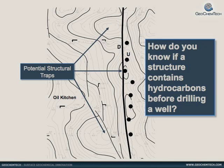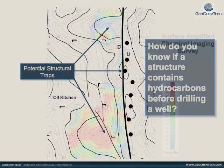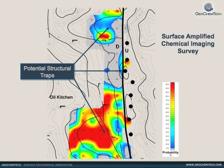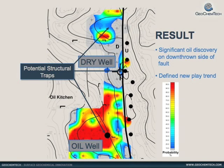The oil kitchen is located to the west. Before drilling a well, how do you know if any of the mapped structures contain hydrocarbons? A surface amplified geochemical imaging survey answered the question and identified the structure with the highest probability of trapped hydrocarbons. Subsequent drilling confirmed the interpretation.